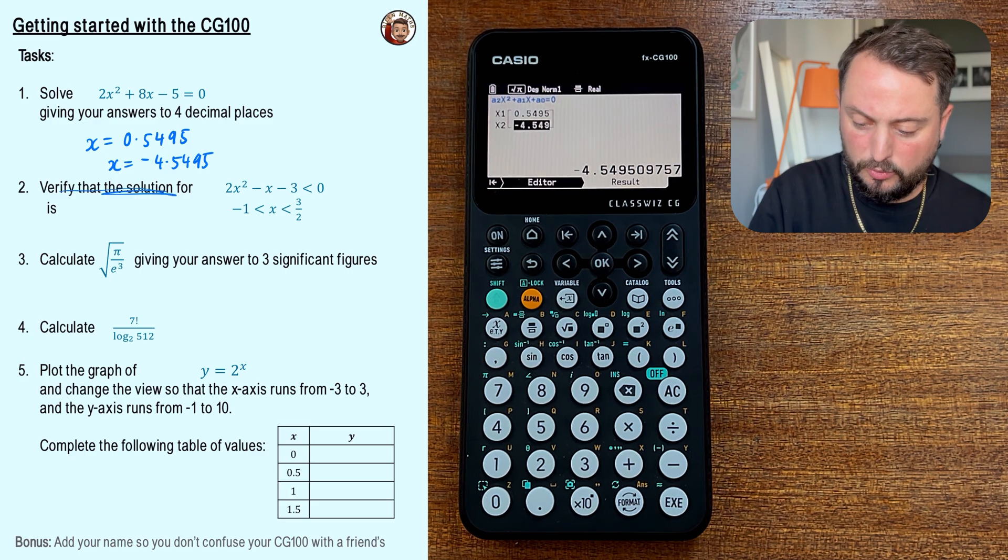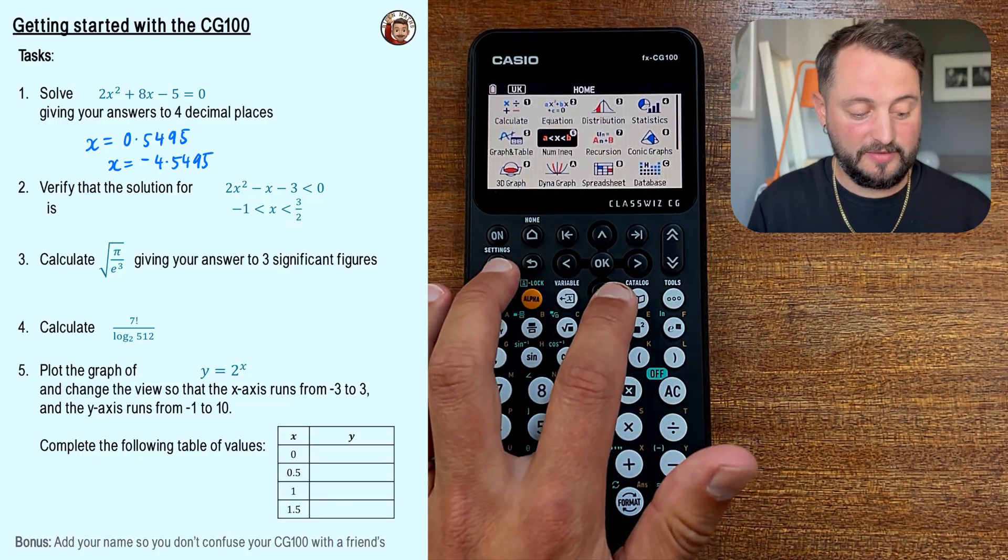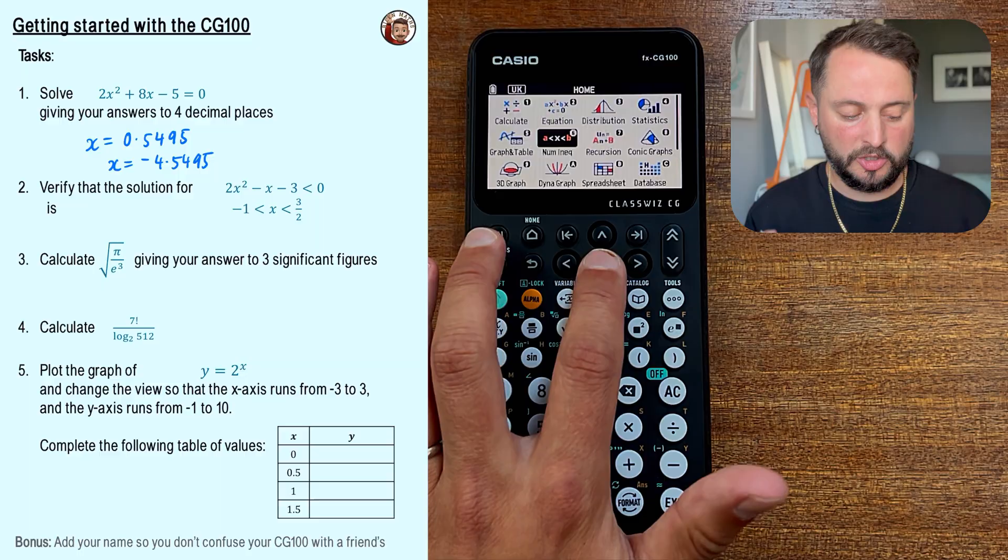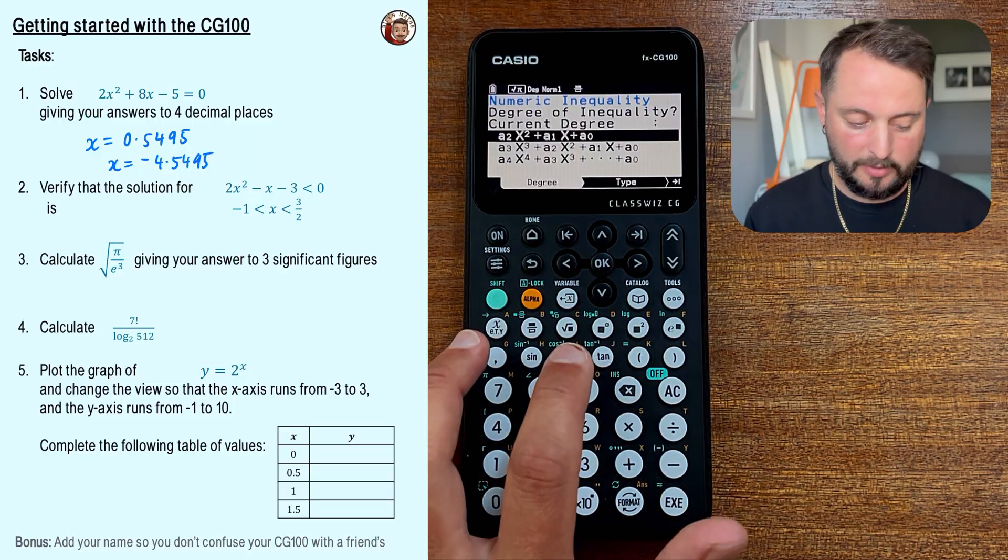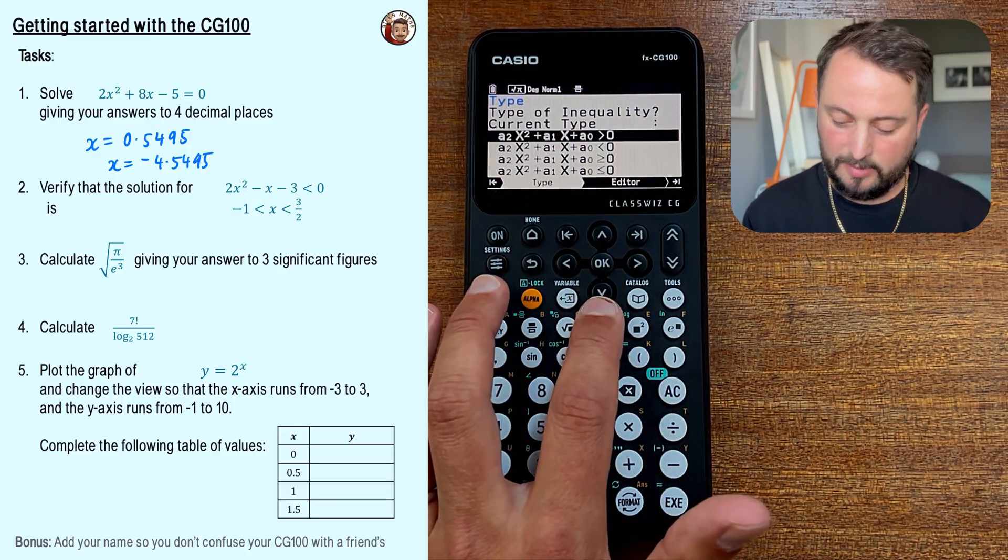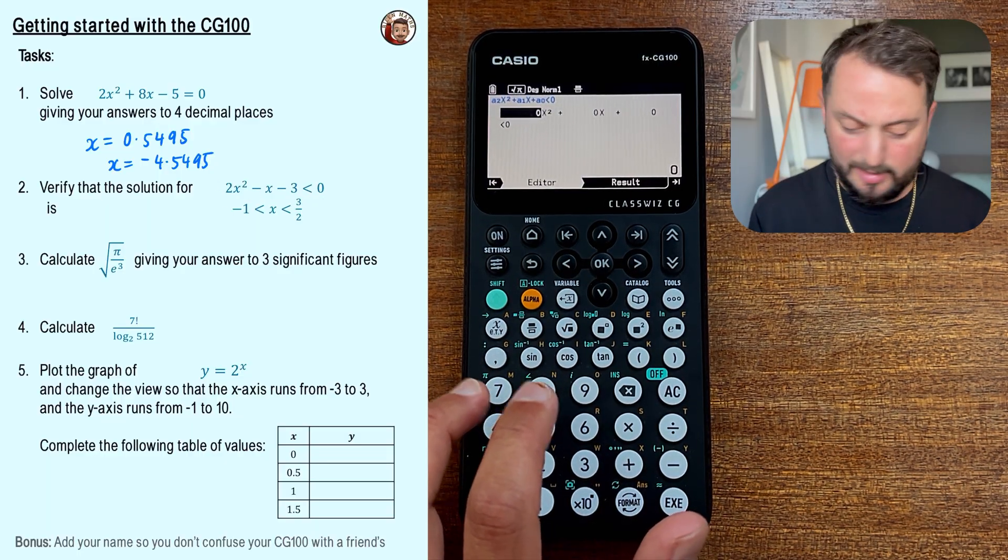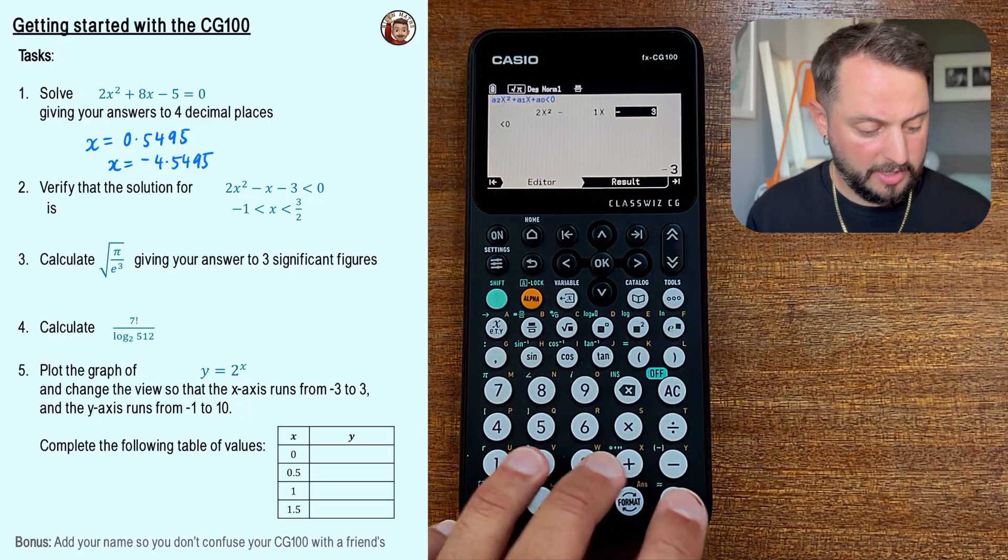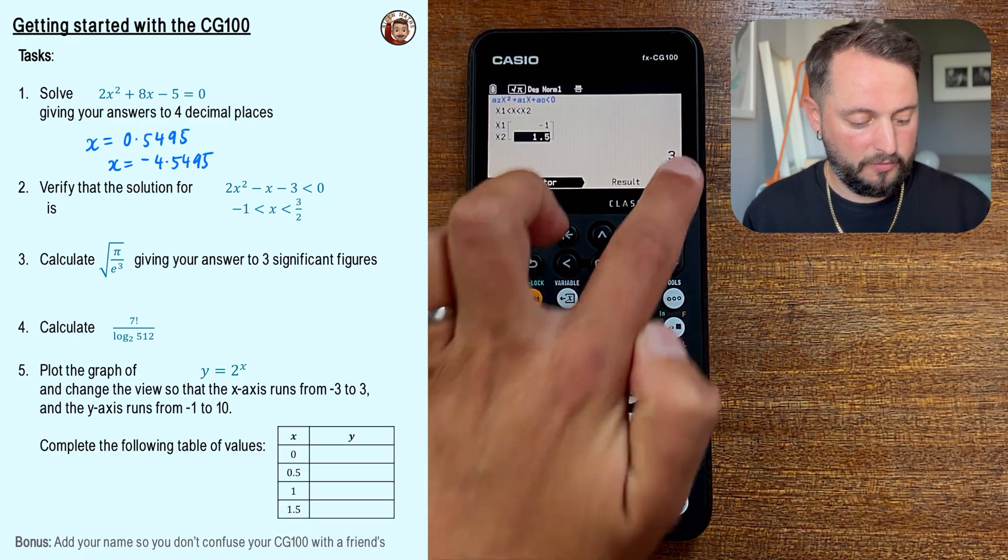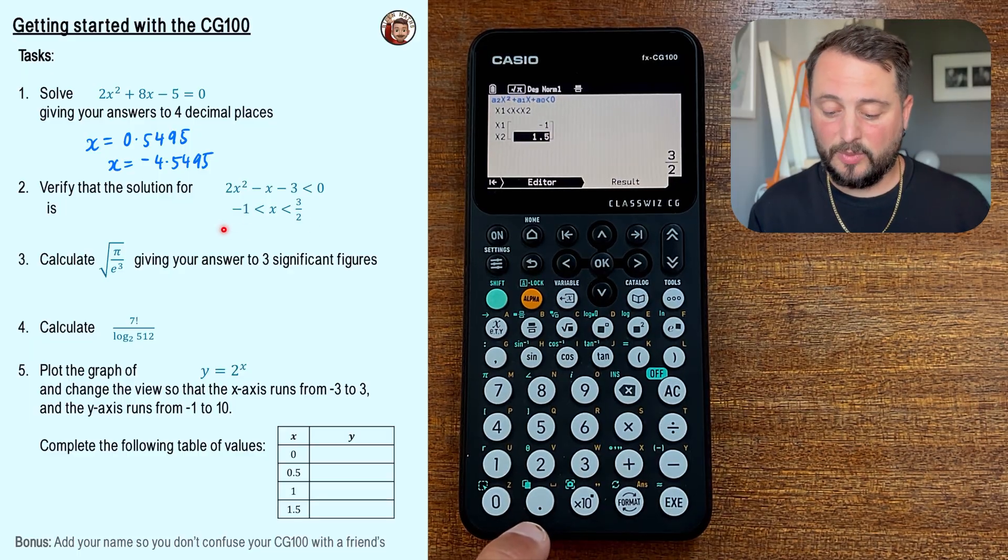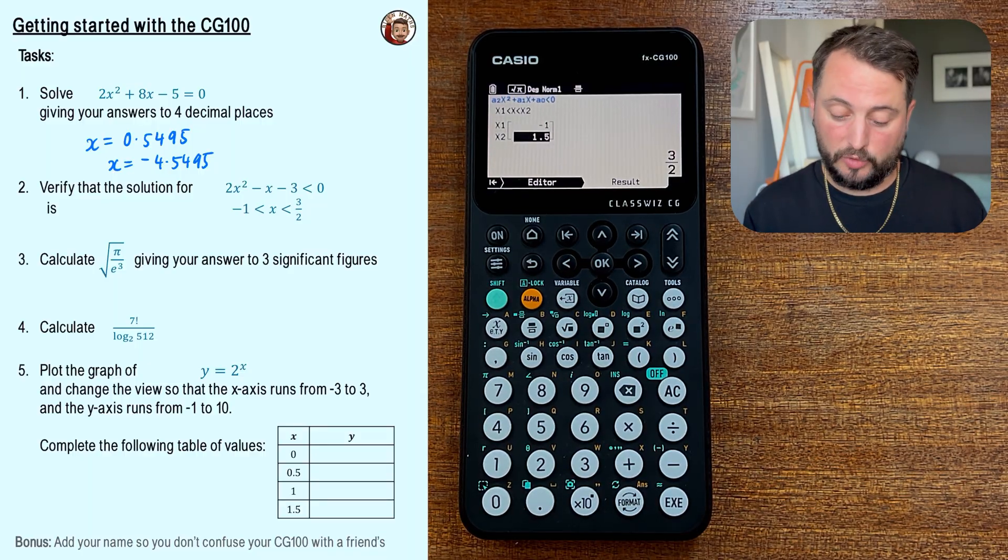Okay, the next one says to verify that the solution of this quadratic inequality is this one. Now I've included this because the CG50 couldn't solve inequalities, but the CG100 can. So it's much better than that previous model in this sense. So I'm going to go to number inequality, which is number six. I'm going to say that it's a quadratic, which is this first type here. And I'm going to be saying that it's less than zero. So I'll scroll down to this part and I'll put in my two, my minus one, and my minus three. Two, minus one, and minus three is my coefficients. And it does say that x is between x1 and x2, which is between minus 1.5 and 3/2. So it's exactly as we had already worked it out manually. This is really just trying to demonstrate. Using a graphics calculator is fantastic for checking your answers.